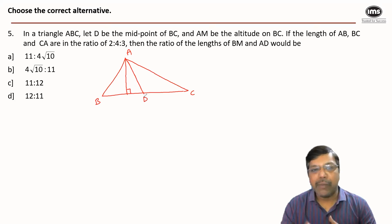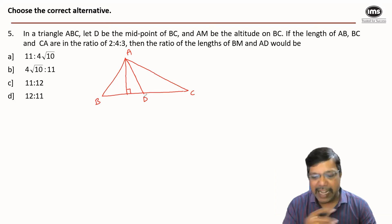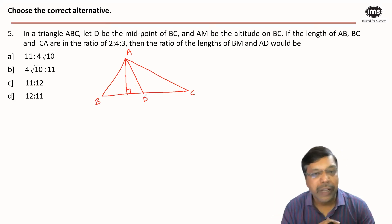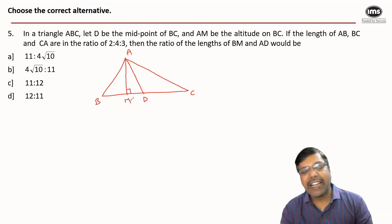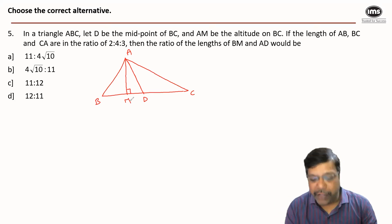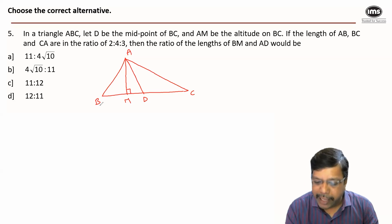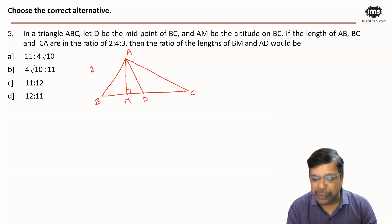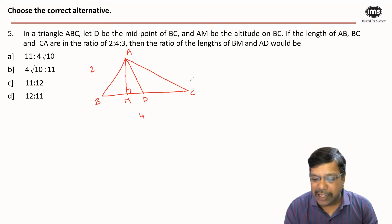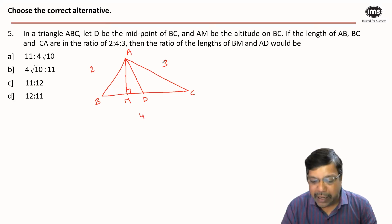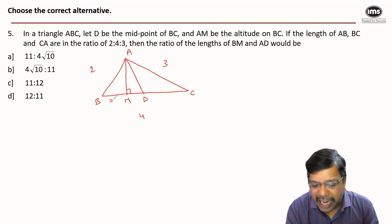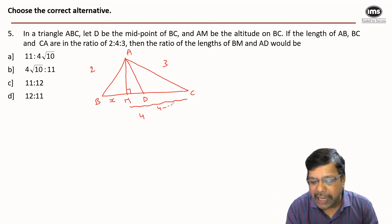The lengths of AB, BC, and CA are in the ratio 2:4:3, and we need to find the ratio of lengths BM and AD. Let the length of AB be 2 units, so BC is 4 units and AC is 3 units. If BM is x, then MC will be 4 minus x.